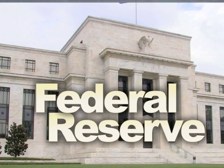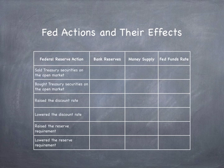This video lesson is on the Federal Reserve, the Mechanics of Monetary Policy. What will happen to the bank reserves, money supply, and the federal funds rate if the Federal Reserve sold treasury securities on the open market, bought treasury securities on the open market, raised the discount rate, lowered the discount rate, raised the reserve requirement, and lowered the reserve requirement?